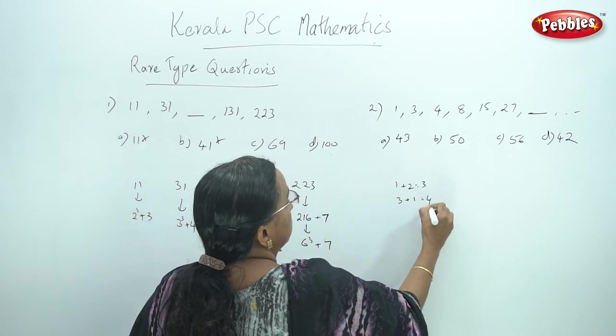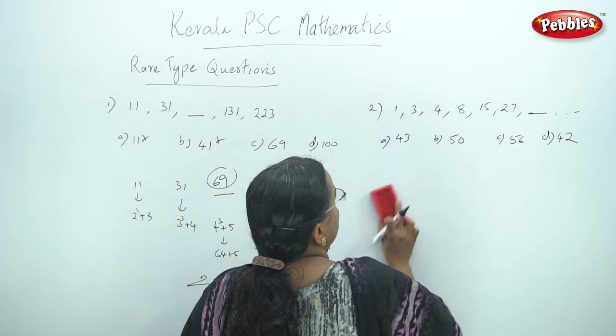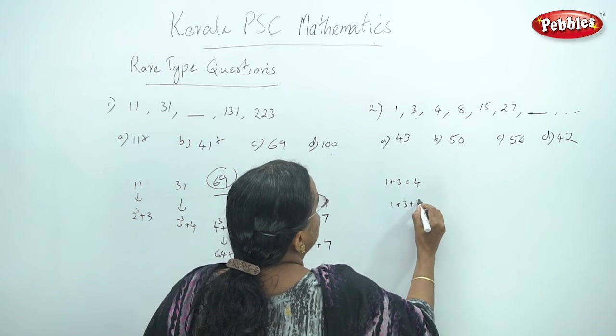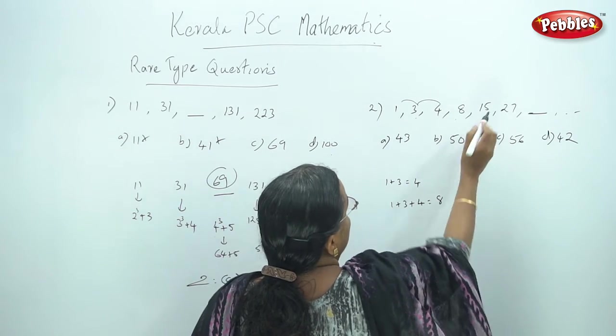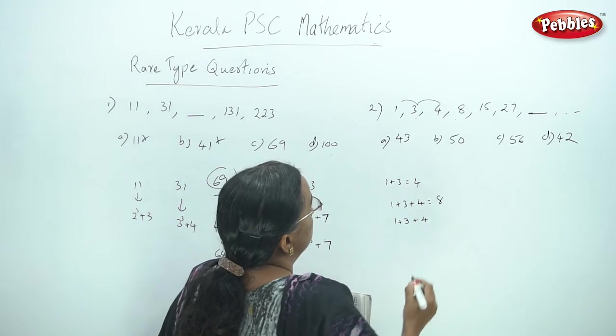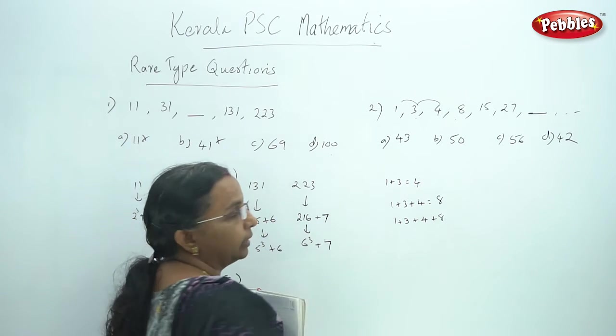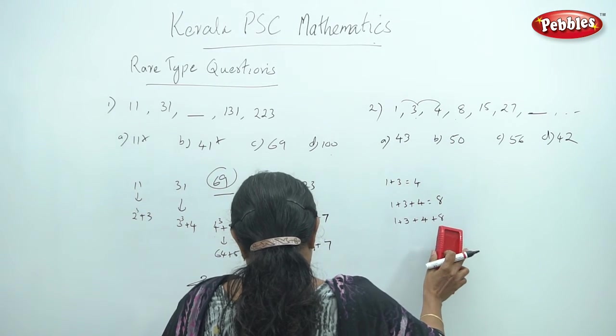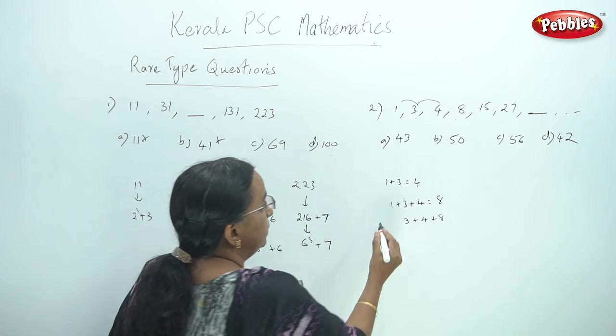Now 3 plus 1 is 4. This is not the first relationship. Now 4 plus 4 is 8. This is not the first relationship. 1 plus 3 is 4. 1 plus 3 plus 4 is 8. This is not the second relationship. We have to write the number one.